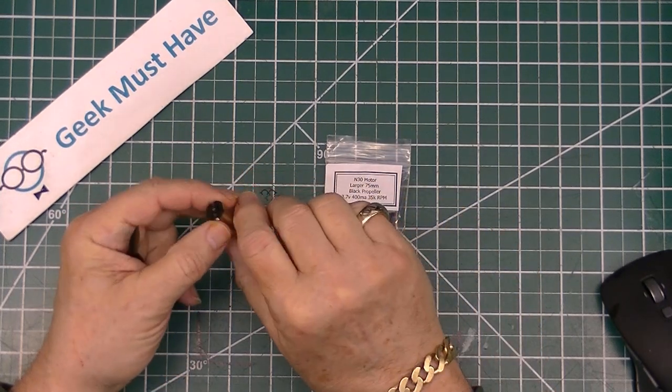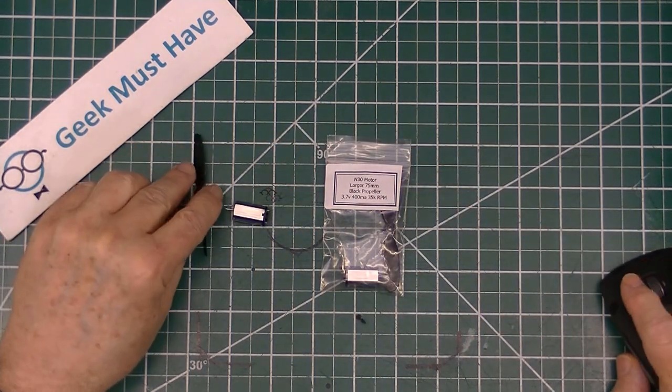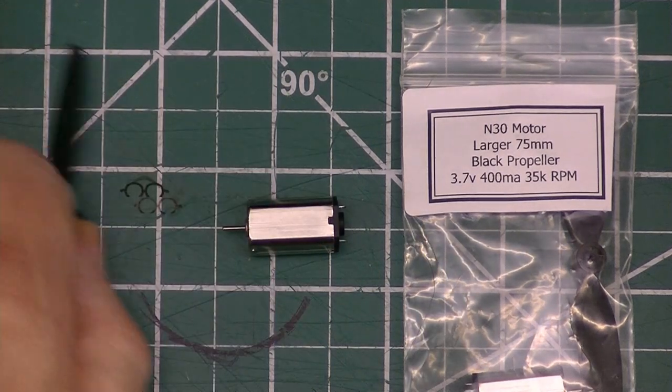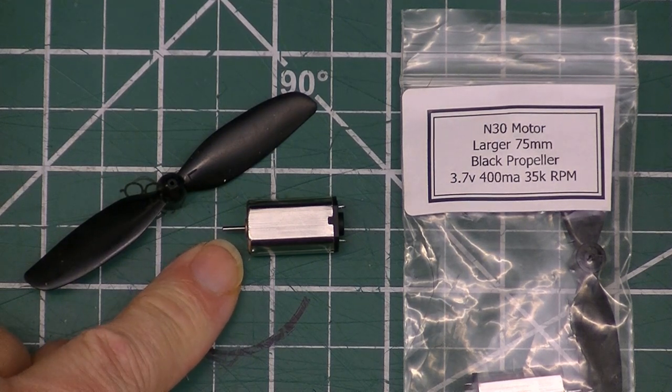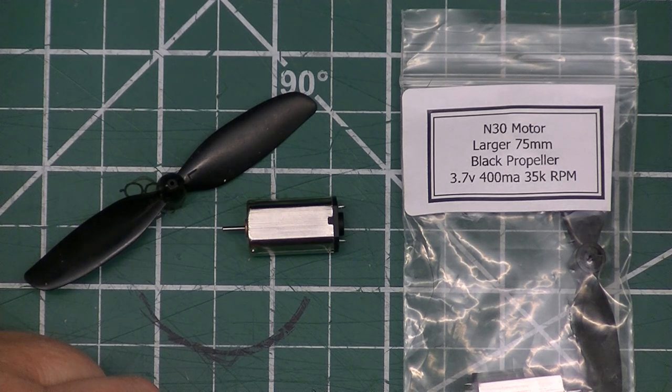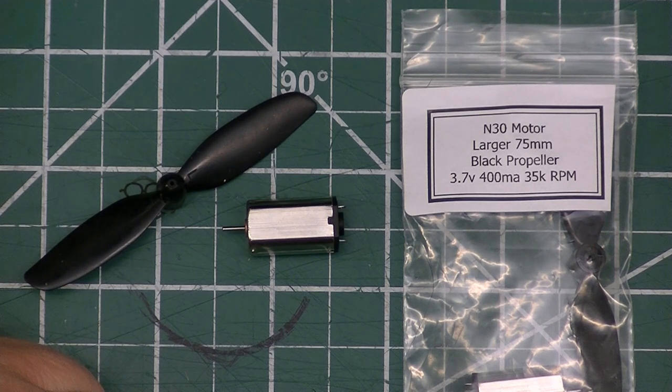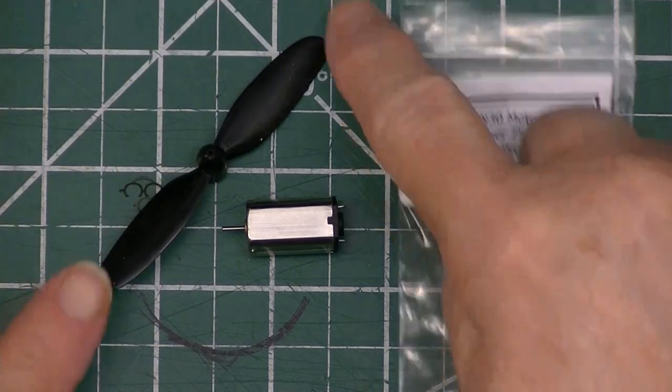This item is another N30 high speed motor with a black propeller. The propeller fits on the shaft which has a 1 millimeter shaft on it. This runs on 6 volts and is a 12,000 RPM motor. It says on the instructions 12,000 to 19,000. I don't know why the bag has 35,000 on it. The propeller is 55 millimeters wide.